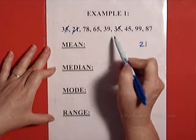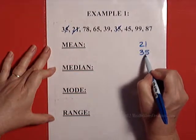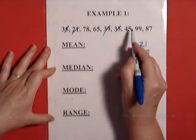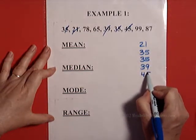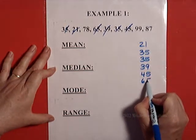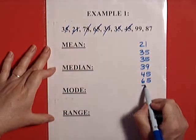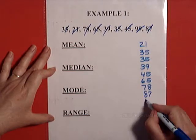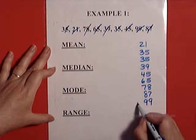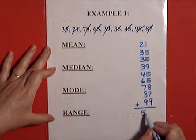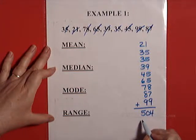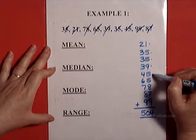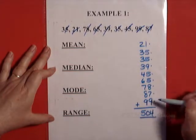So let's start with 21. Okay, in the next one you have two 35s, and then you have 39, you have a 45, you have a 65, a 78, an 87, and a 99.